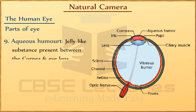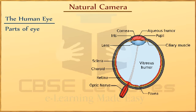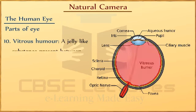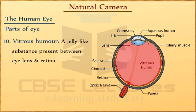Aqueous Humor — a jelly-like substance present between the cornea and the lens. Vitreous Humor — a jelly-like substance present between the eye's lens and retina. It supports the back of the eye.